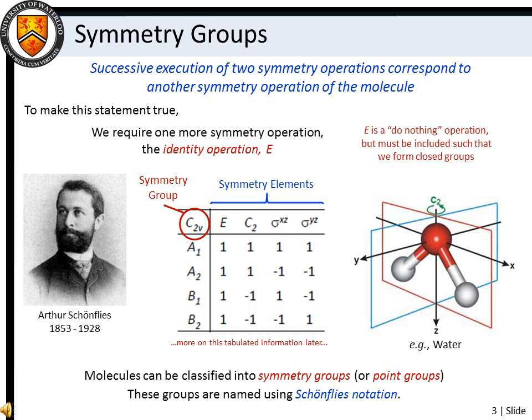A symmetry group is defined by the symmetry elements that it contains. No two symmetry groups share exactly the same set of elements or operations. For example, molecules that exhibit the symmetry elements E, C2, sigma-XZ, and sigma-YZ belong to the symmetry group C2V. Water has C2V symmetry. These groups are named using the notation devised by Arthur Schoenfleis.